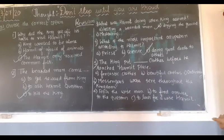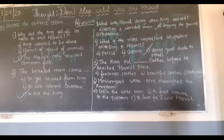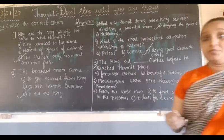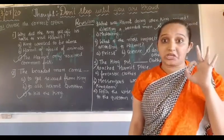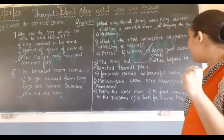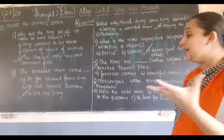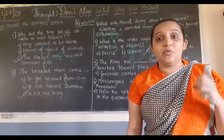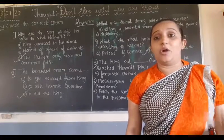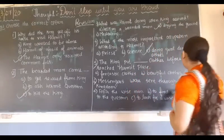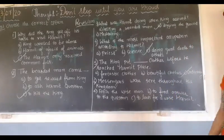The king put on certain clothes before he reached the hermit's place. Fantastic clothes means like a king's grand clothes. So the options are: fantastic clothes, beautiful clothes, or ordinary clothes. Since he wanted to enter as an ordinary person, of course he dressed in ordinary clothes.